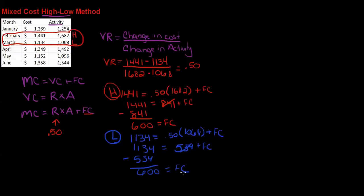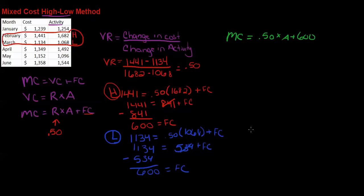Now we can write a cost formula based on this. We can take this formula and write it as a planning formula: mixed cost equals 50 cents times activity plus 600. We can use that to plan going forward.